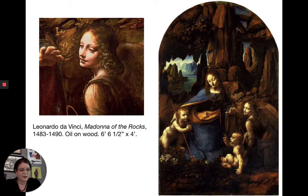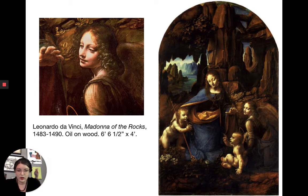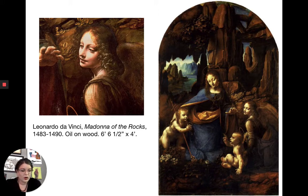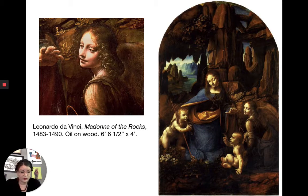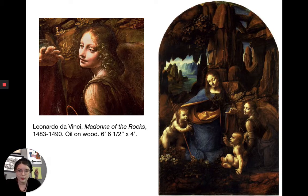If you look at the figures, they form a kind of triangular composition. The gestures — the pointing, praying, and blessing — make your eye move around the painting, creating movement and balance. The angel points to John the Baptist but looks at the viewer to draw them in. John makes a praying gesture towards the Christ child, who blesses John in return. Mary rests her right hand on John and reaches her left hand toward her son, grounding and centering all the action.